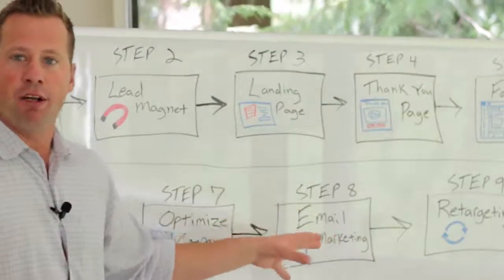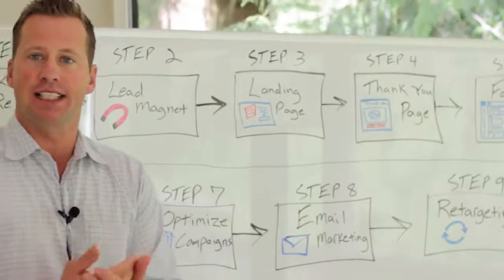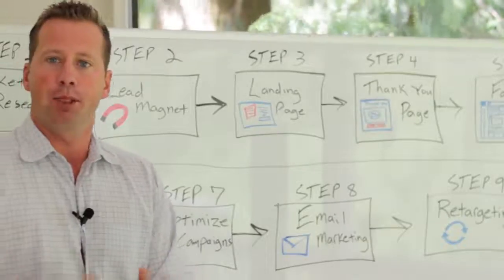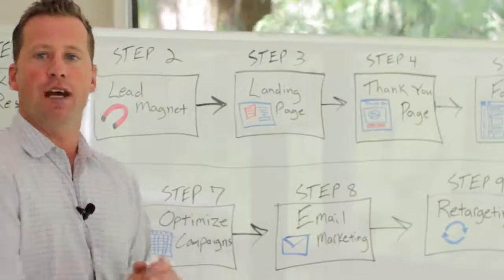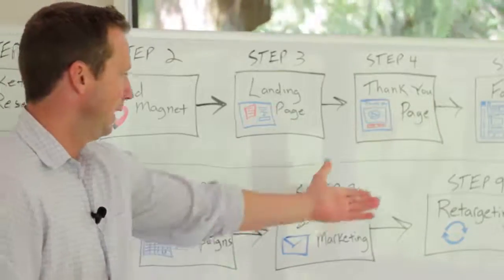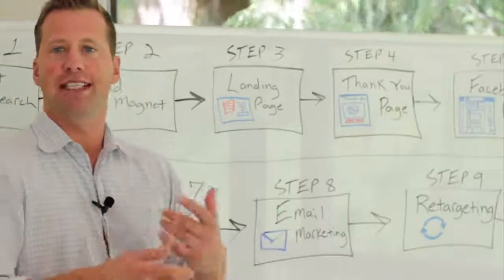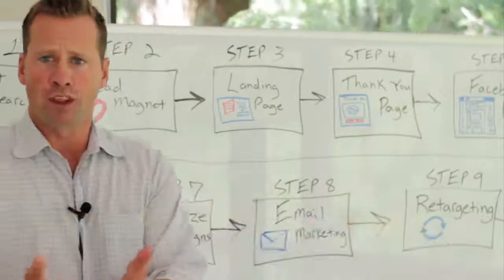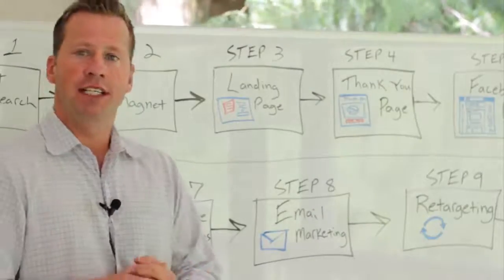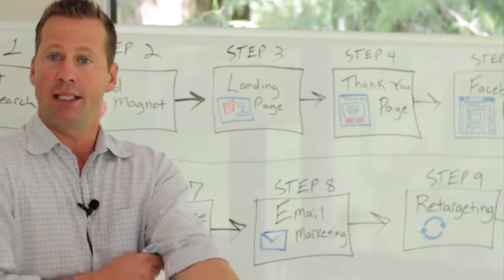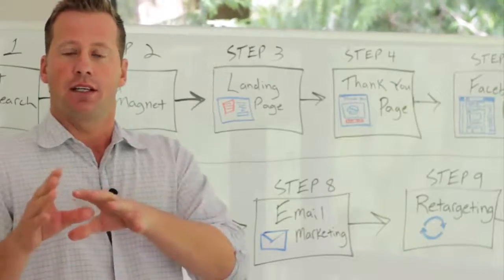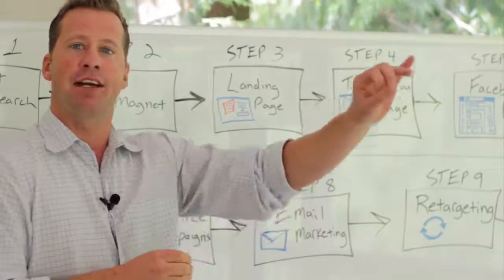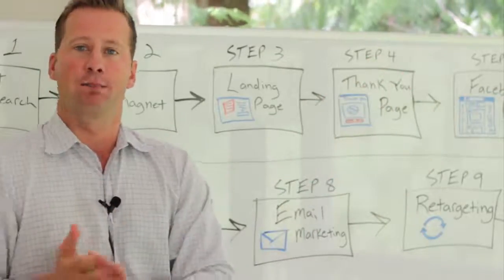The next step is to use email marketing to move people to take action. Facebook is like the first date — the introduction. You need to use email to build that relationship, build that friendship, and eventually turn them into a customer or client. Then step eight and step nine work simultaneously together. You can be using email marketing at the same time as you can be retargeting your visitors. Retargeting is when somebody lands on your website, landing page, or blog, then leaves and goes back to Facebook or another site, and then sees a Facebook ad about your business bringing them back into your sales process.